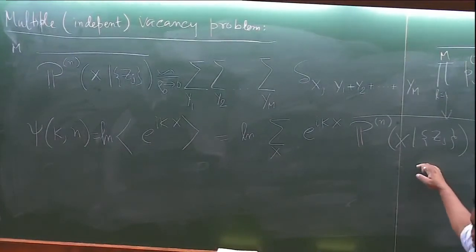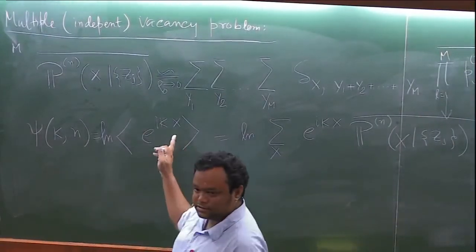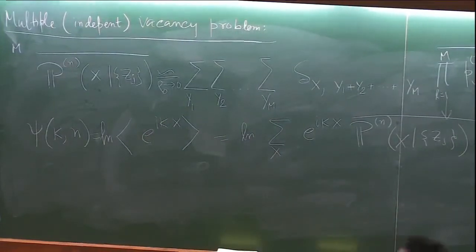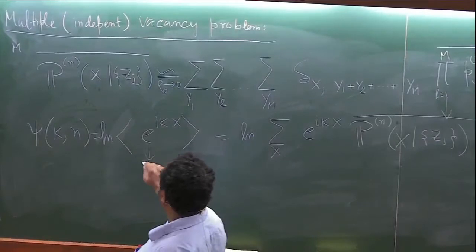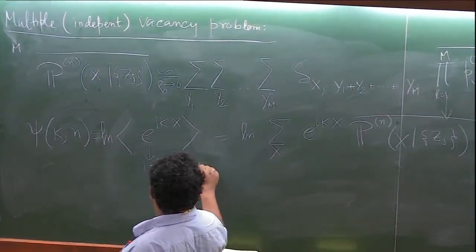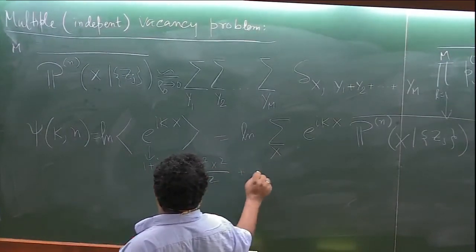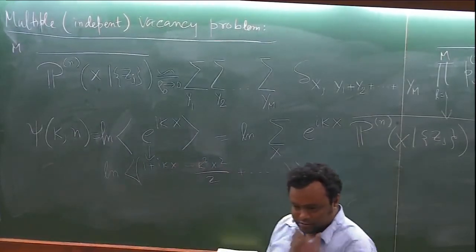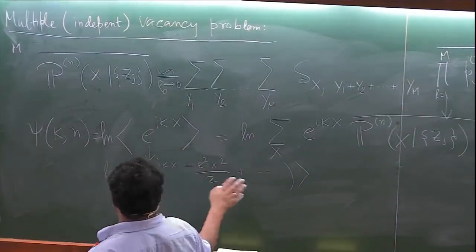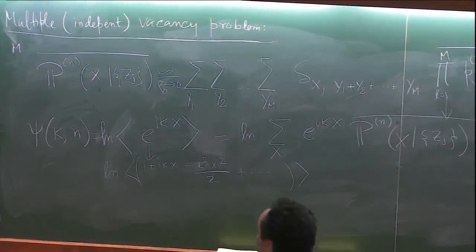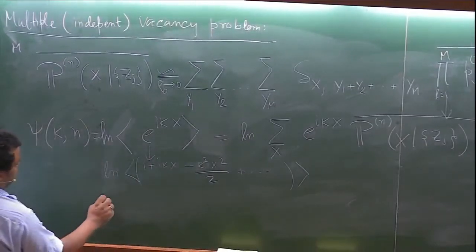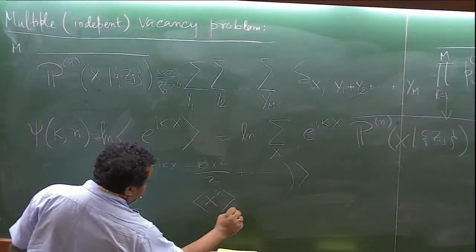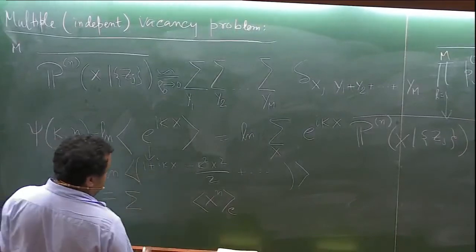We'll try to compute the cumulant generating function of x, which is defined as the log of the Fourier transform of the distribution averaged over initial conditions. That is, log of sum over x of e^{ikx} times P_n(x, z-bar). If we know this, then we know all the moments of x. You expand this as 1 + ikx - k²x²/2 and so on, take the log, and expand again.